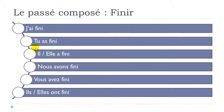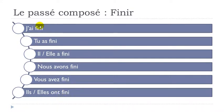Let's see them one more time. Remember, as we saw previously, you've got avoir here and then you've got fini — the participe passé form, the second element you add to construct the passé composé. And fini doesn't change.